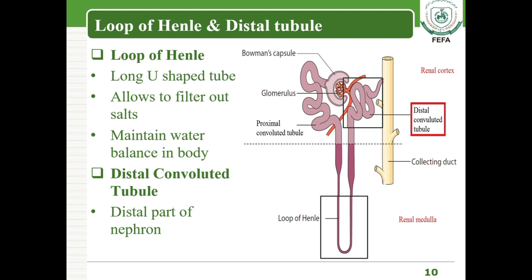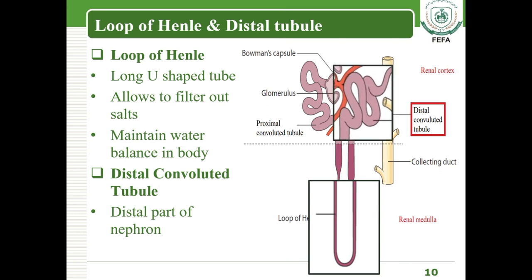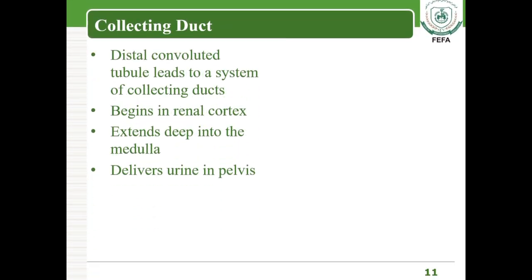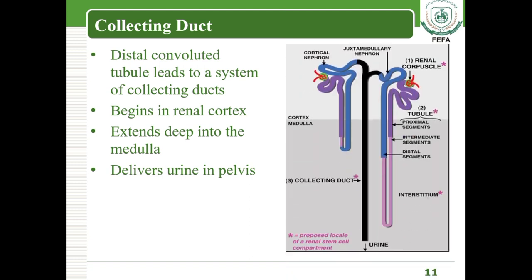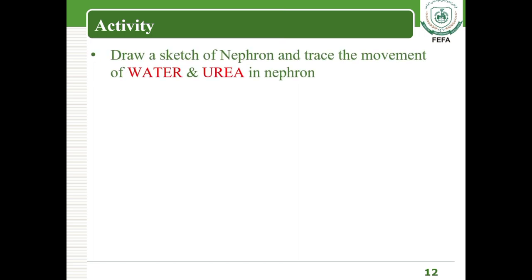The distal convoluted tubule is the part of the renal tubules that is away from the glomerulus and Bowman's capsule, as clearly seen in the diagram. The collecting duct collects the urine — containing waste, toxic, and excess materials — gathered by the renal tubules. It begins in the renal cortex, extends deep into the medulla, and delivers urine to the renal pelvis and then to the ureter.